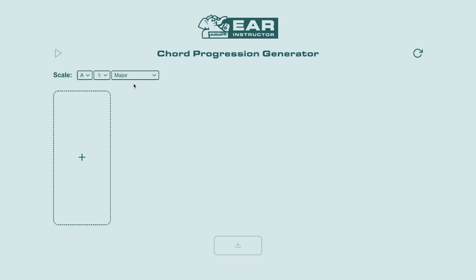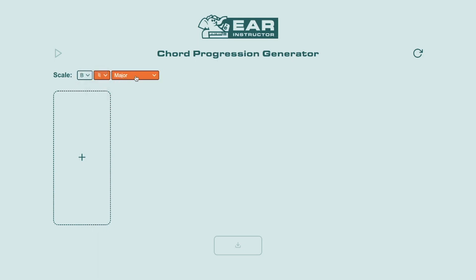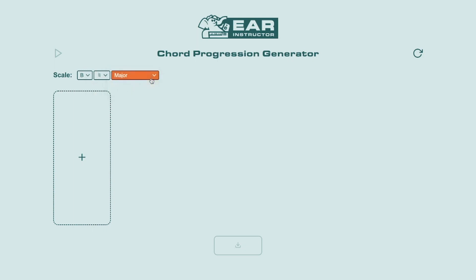So for the scale, you can choose the tonic, which is the note name and whether it's sharp, flat, or natural. And then the type of scale, where the current options are major, natural minor, and harmonic minor. Again, you can change any of these later on whenever you want.